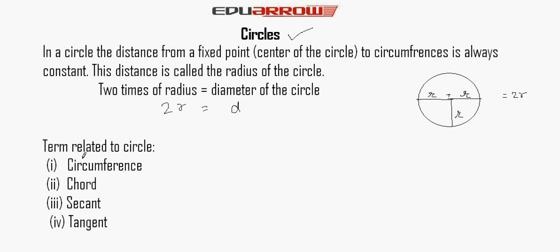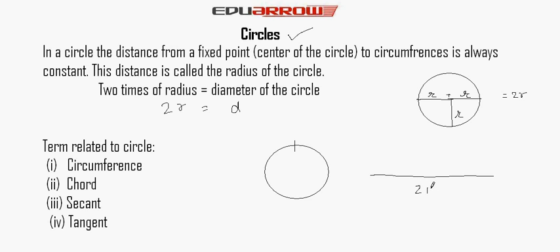Now we read terms related to the circle. Number 1: Circumference. If we cut this circle and straighten it, it makes a straight line whose length is equal to 2πr, where r is the radius of the circle and π is a constant value. The value of π we can take as 22/7 or 3.14 according to the question.